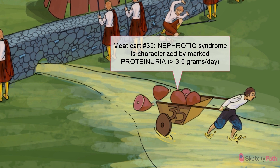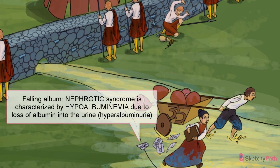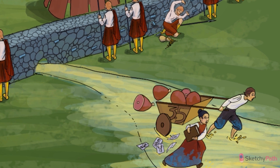Just look at this poor Scottish peasant here, fleeing with his meat cart down the Bowman's capsule. With long-standing or severe proteinuria, serum albumin levels decrease as more and more is lost in the urine. At Sketchy, decreased serum albumin is symbolized by photos falling from an album — though this is the 1300s, so those are probably lithographs. Notice that the photos are falling directly into Bowman's space to emphasize excessive urinary loss of albumin. That's hyperalbuminuria with resultant hypoalbuminemia.